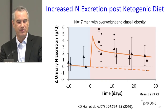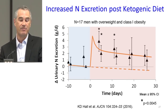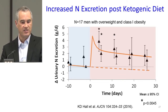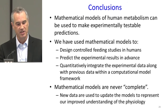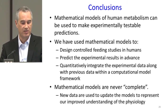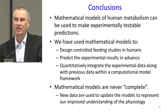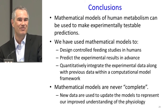The point here is that we've used models to help design clinical experiments, run those experiments, and then integrate the data within the model afterwards — having in one place a way to continuously update how we think about the physiology. Just to conclude: mathematical models of human metabolism can be used to make experimentally testable predictions; we've used the models to design controlled feeding studies in humans, predict experimental results in advance, and then quantitatively integrate experimental data along with previous data within the computational models. These models are never complete — they're always evolving. One of the purposes of designing these experiments is to prove them wrong, because the models represent our current physiological understanding. The idea of science as a whole is not to prove yourself right, but to prove yourself wrong. You hope that you're the one who proves yourself wrong, so that you can advance the science forward.